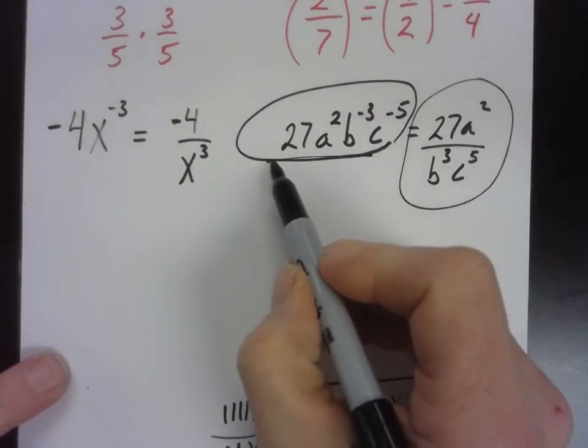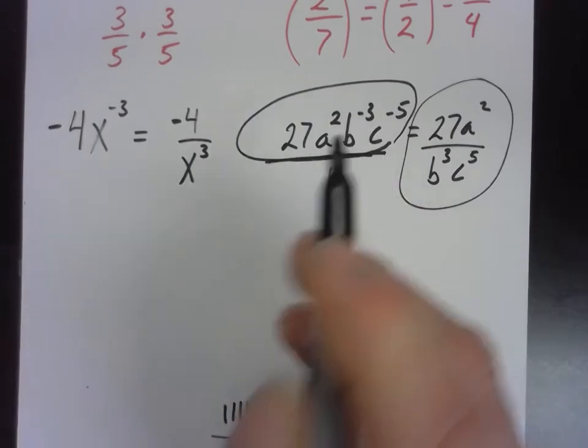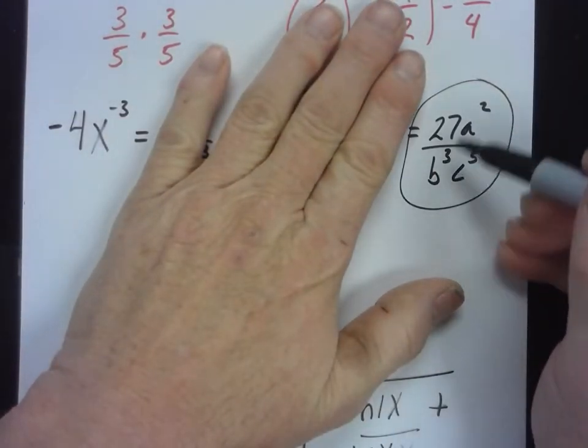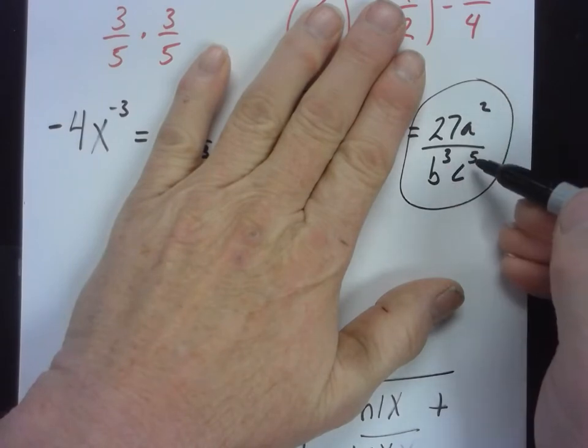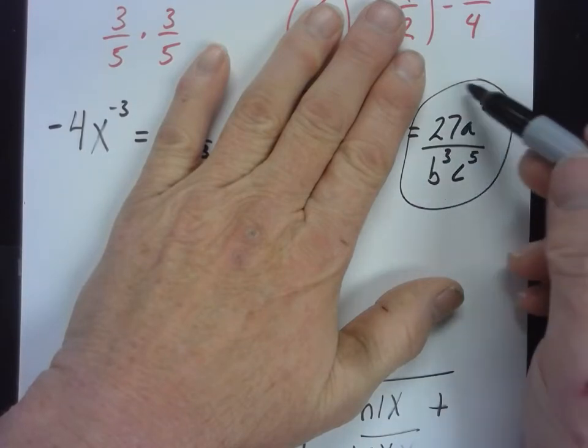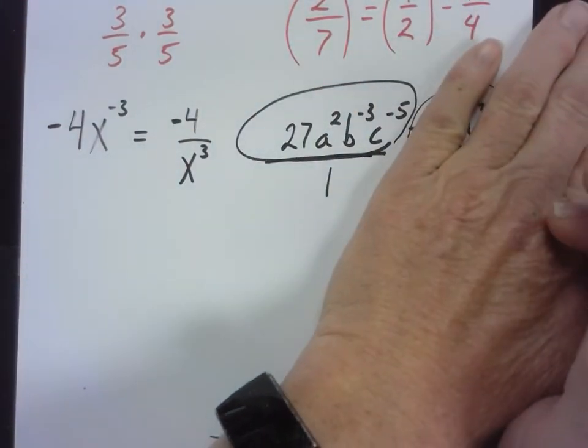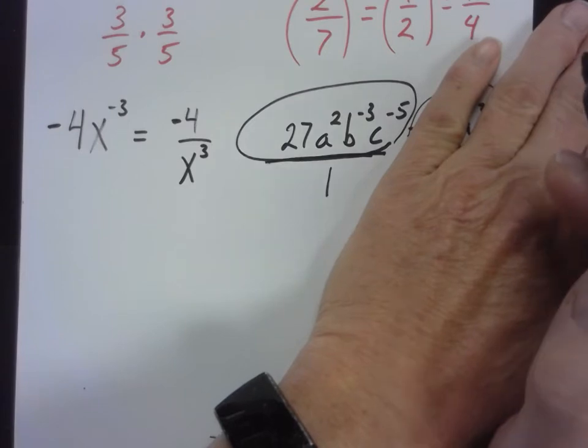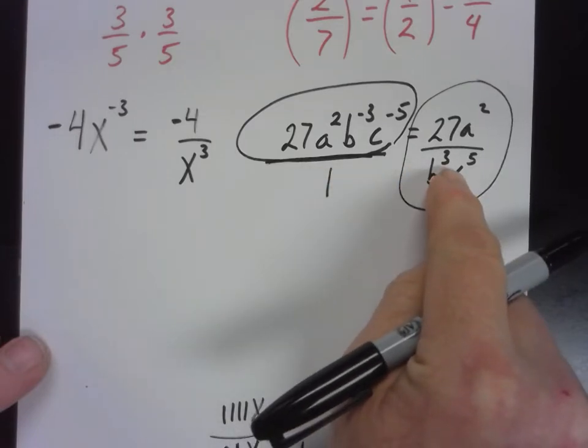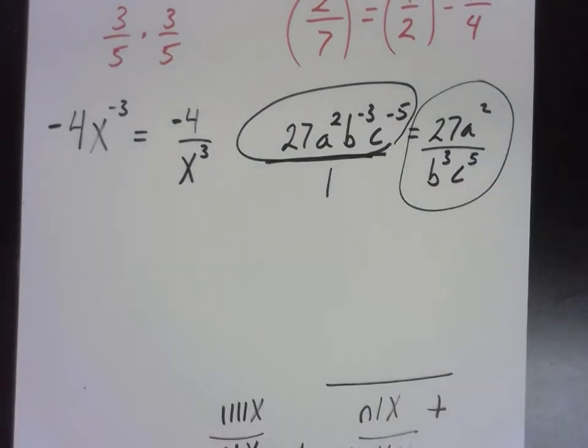Now, these are both acceptable ways to write an answer to an expression or an equation or something. This one, you notice all of the variables are in the numerator. See how they're all on the top of the fraction? And we're okay with that. You guys like it when there's no fractions? This is the other correct way we can write an answer. This way, we have no negative exponents, which is also good. Do you guys like negative exponents? No, they're kind of a pain. Sometimes they're nice, and you'll see why, but we often don't like them. So here we have it written with no negative exponents. Here we have it with all the variables in the numerator. So sometimes it's pick your poison. Do you want to not have fractions, or do you want to not have negative exponents?